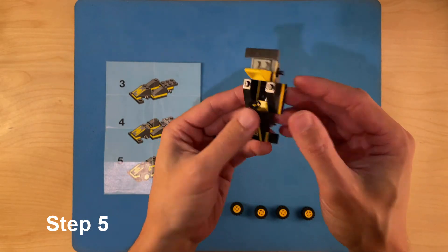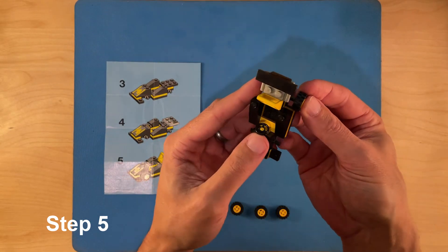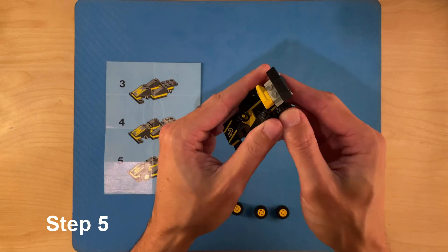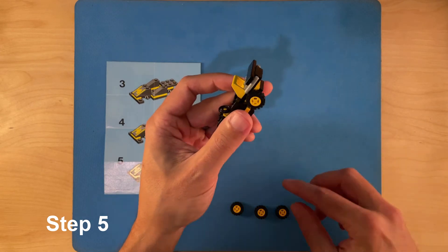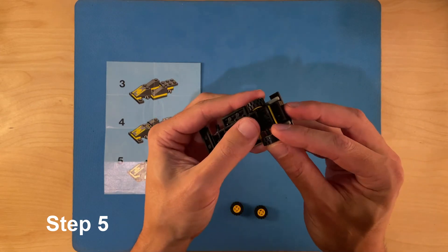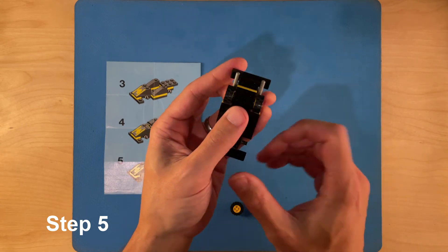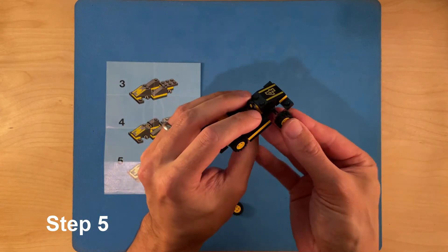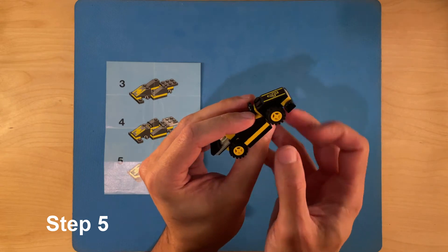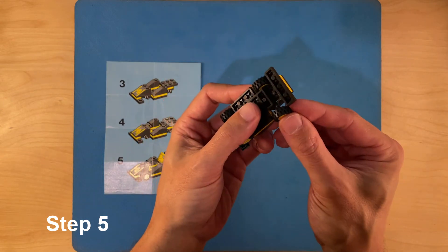And step five, put the wheels on. So we snap those in. Wheel number three. And we're all done.